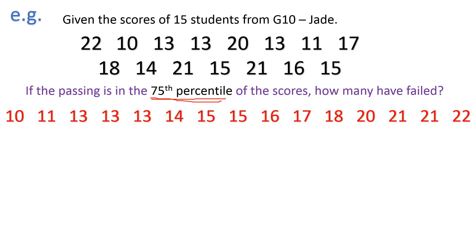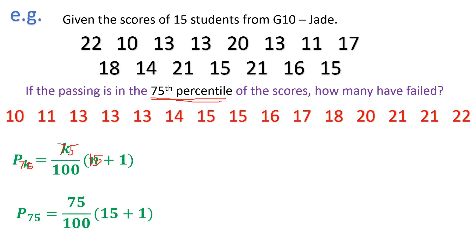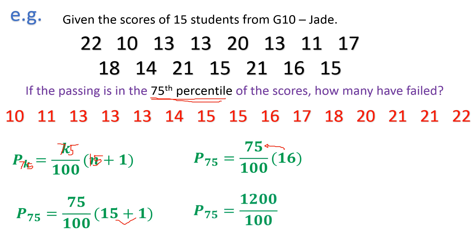Since we are talking about percentile, the formula is: percentile class equals k over 100 times n plus 1. Our k is 75 and n is 15. So P75 equals 75 over 100 times (15 plus 1). Adding terms inside: 15 plus 1 is 16. Then 75 times 16 equals 1,200. So P75 equals 1,200 over 100, giving us 12. We have an exact location — the 12th value is 20. So P75 equals 20.